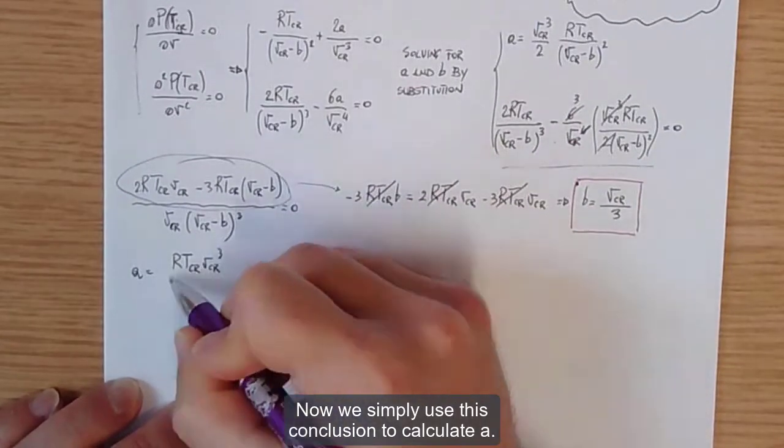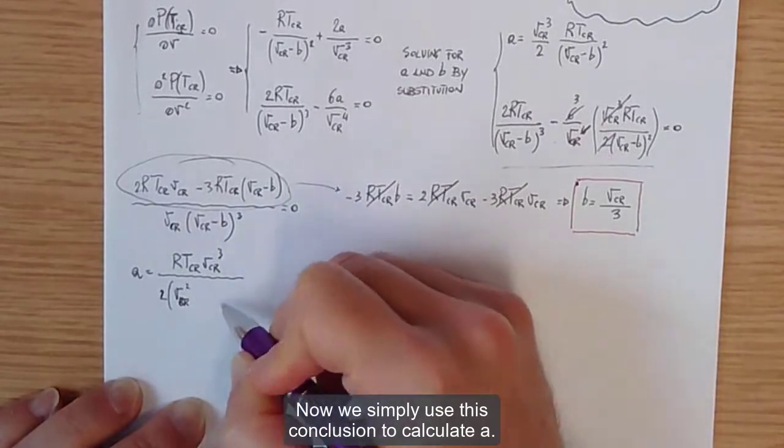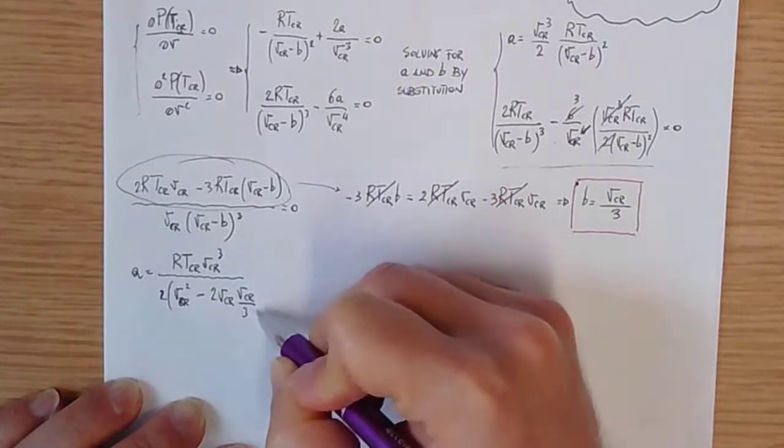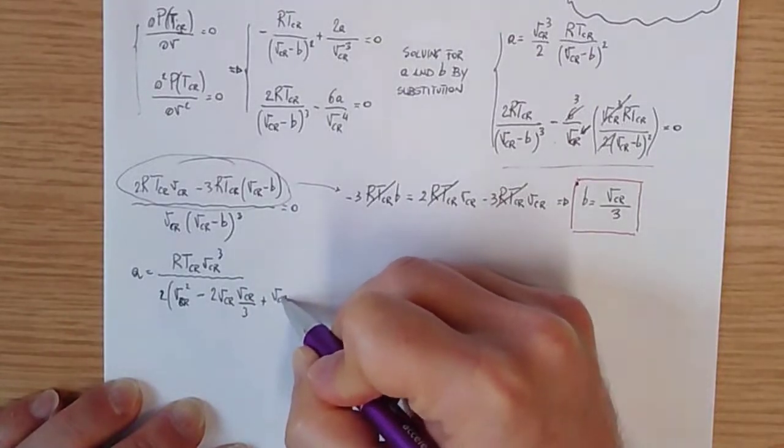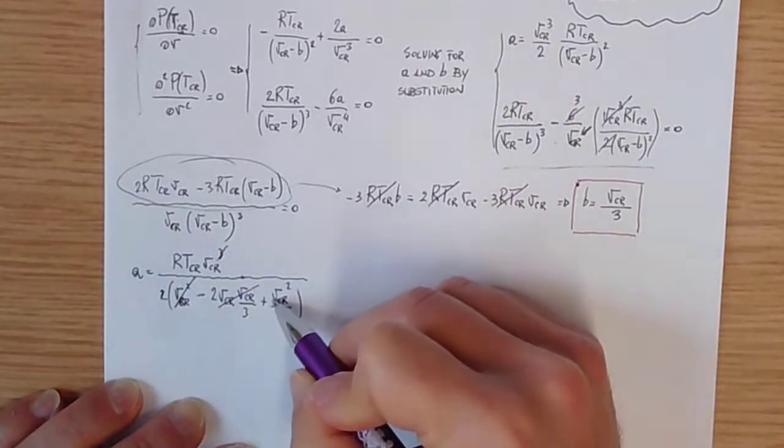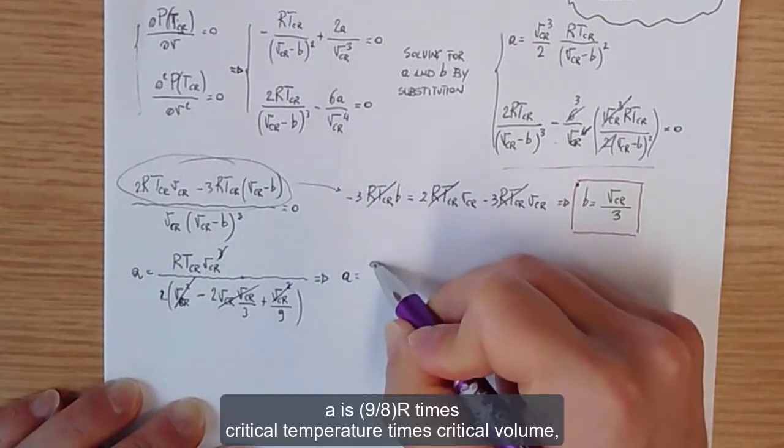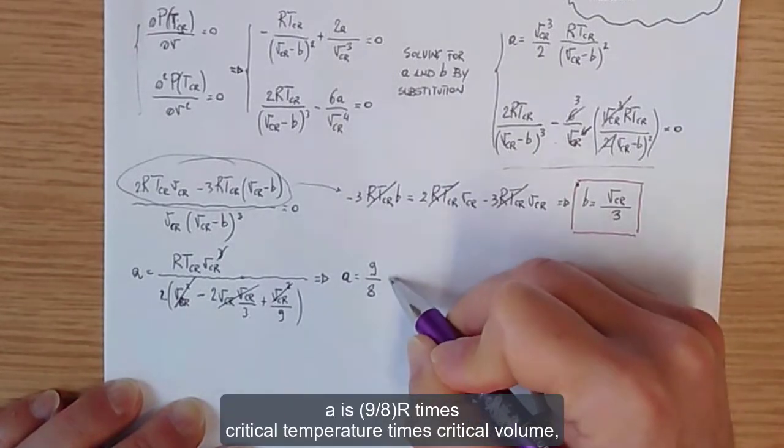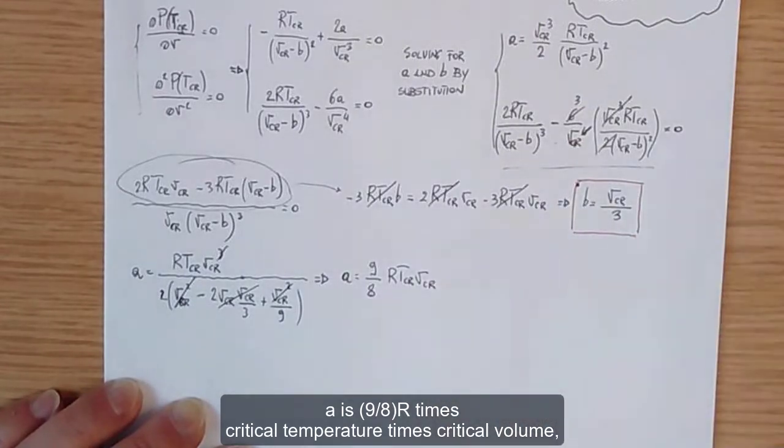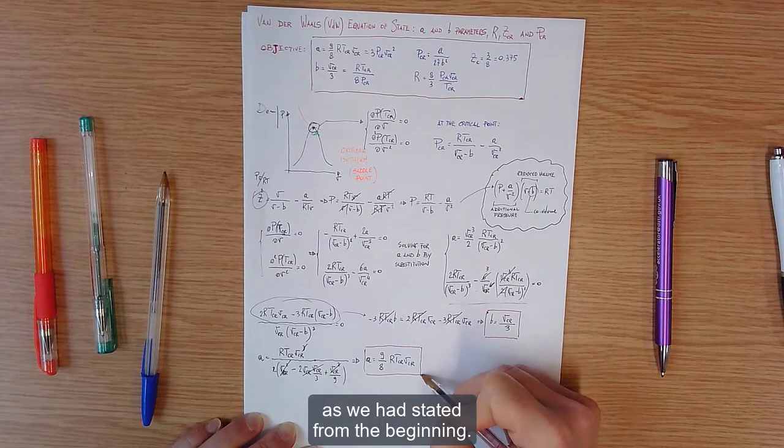Now we simply use this conclusion to calculate a. A is 9/8 R times critical temperature times critical volume, as we had stated from the beginning.